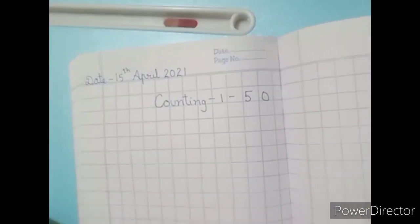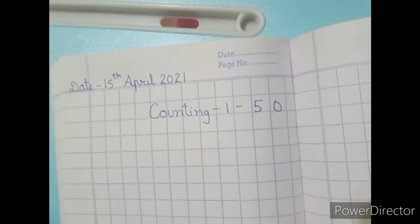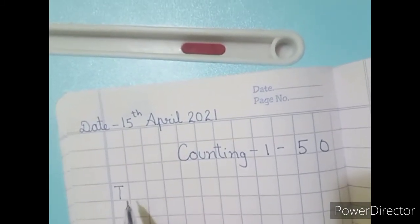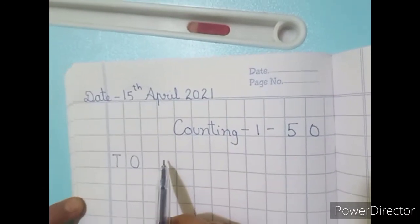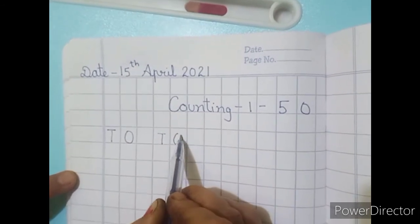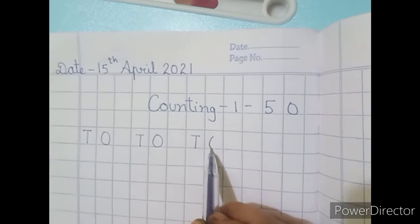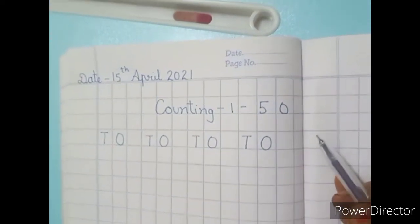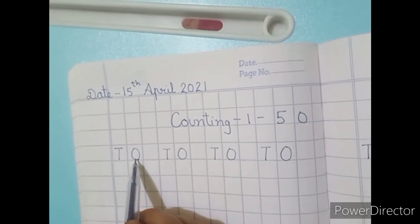Okay students, today we will learn one to fifty counting — see and write. Repeat it after me. I am setting up columns: T for tens place and O for ones place. T is the tens place and O is the ones place.